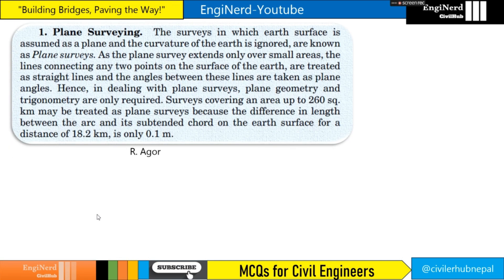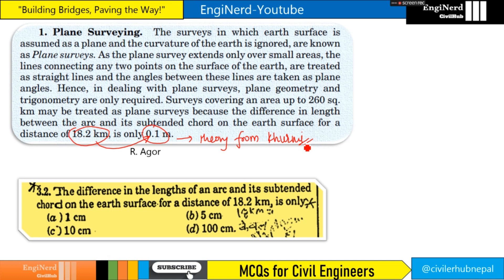R. Agor has clearly written that 18.2 kilometers corresponds to 0.1 meter, similar to Kurmi's theory. This is also different from the former references. However, in R. Agor's objective question about the difference in arc length and subtended chord for 18.2 kilometers, the answer is given as option C — 10 centimeters, i.e., 0.1 meter.